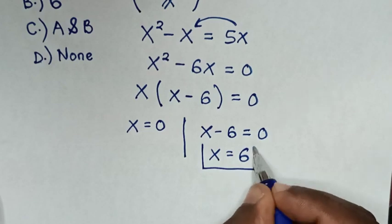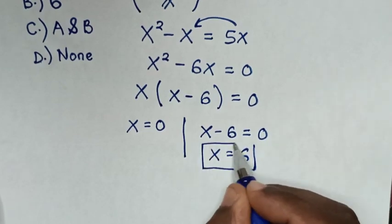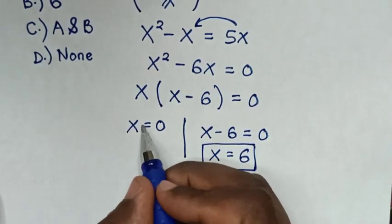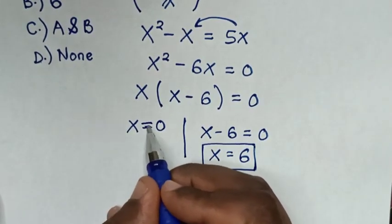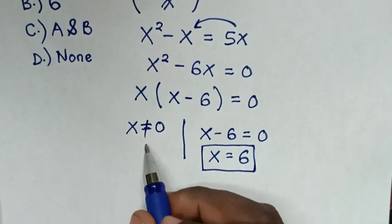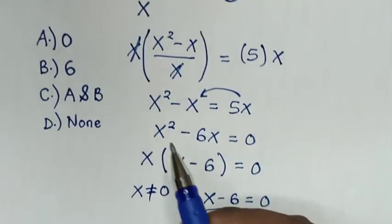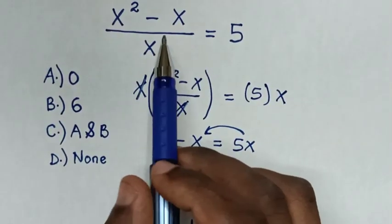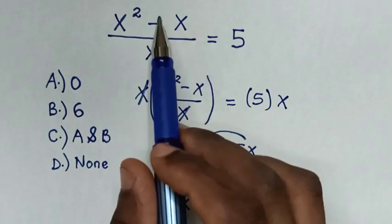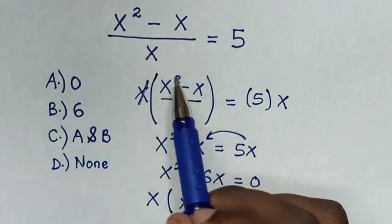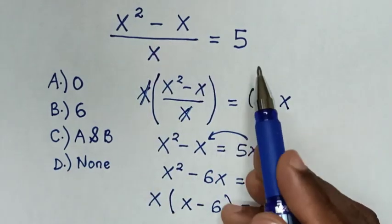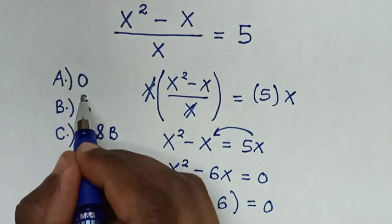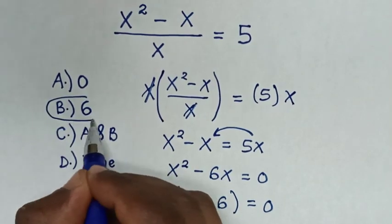However, x is not equal to 0, because when x is 0 and we substitute it into the denominator, that part becomes undefined, which cannot equal 5. Therefore, the correct answer is B.